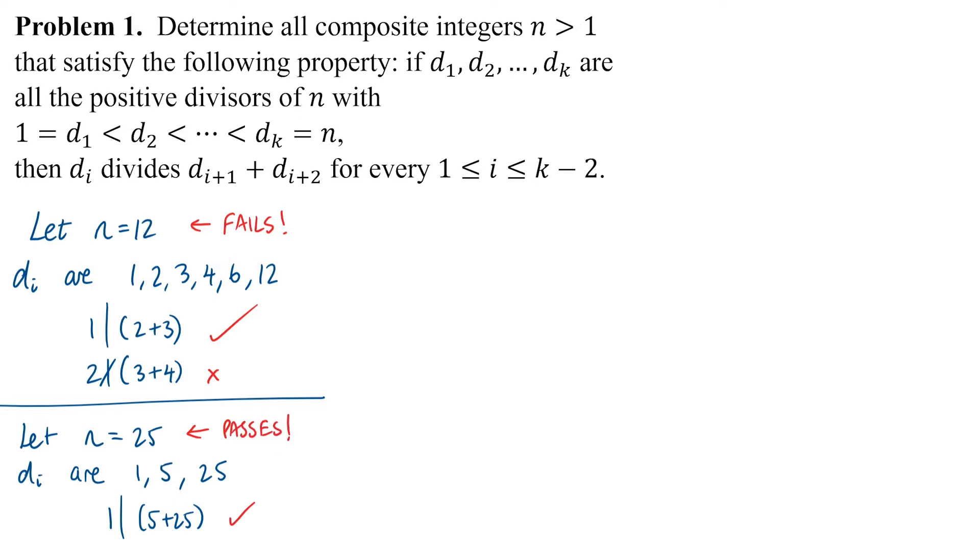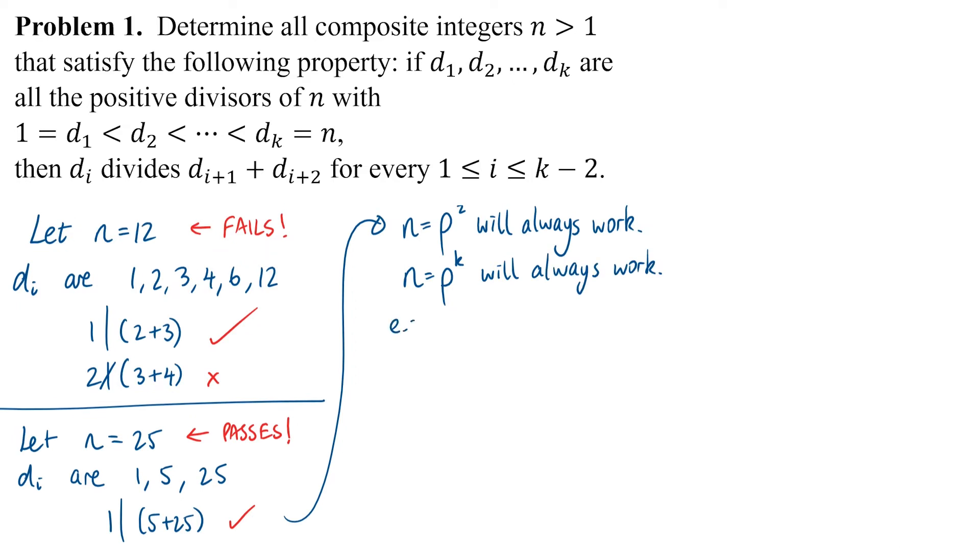From this we can know that any n that is the square of a prime would always work. We can go further because imagine we had the cube of a prime, or any power of any prime, say for example 32 which is 2 to the power of 5.